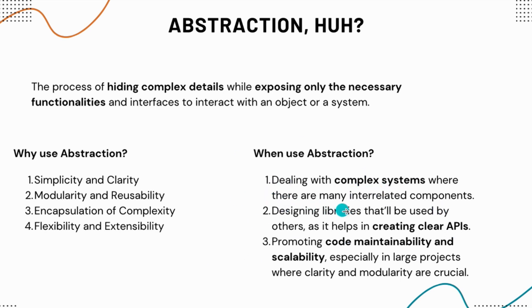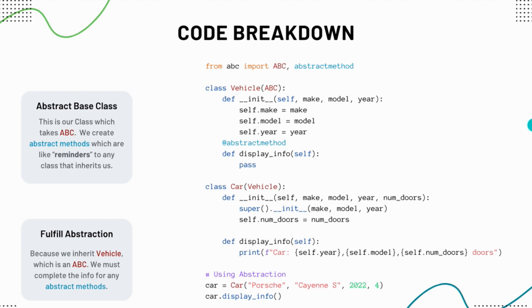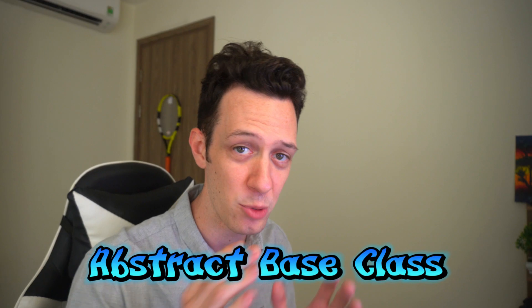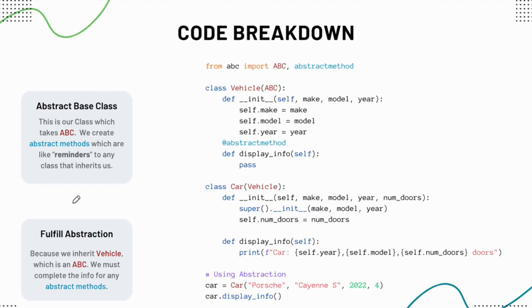Why do we use abstraction? It simplifies our code and enhances readability, allows us to create more modular code, and acts on the idea of encapsulation. We use it anytime you're dealing with complex systems with interrelated components, or when needing to create clearer, more intuitive APIs, or promoting maintainable and scalable code. Let me walk through a code breakdown.